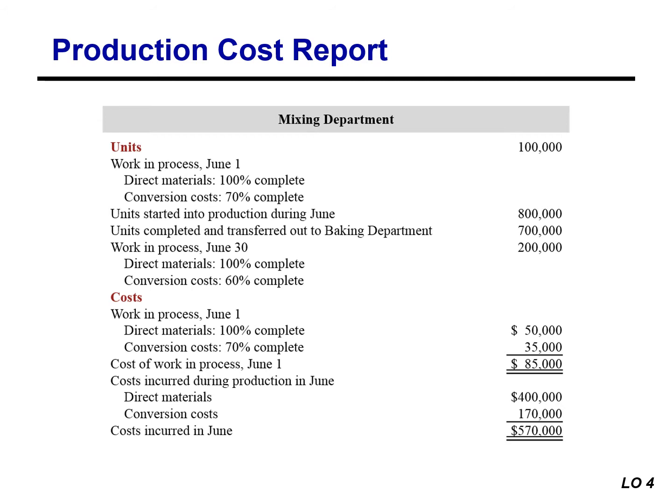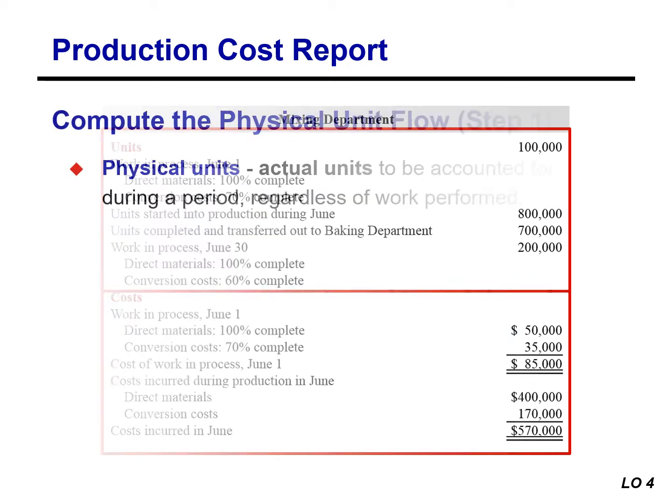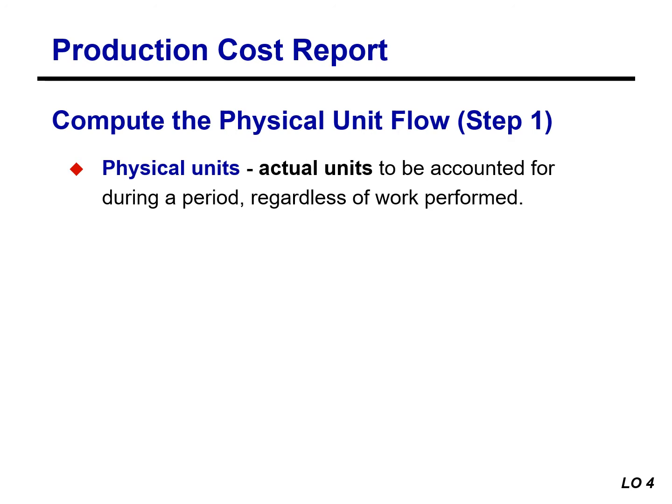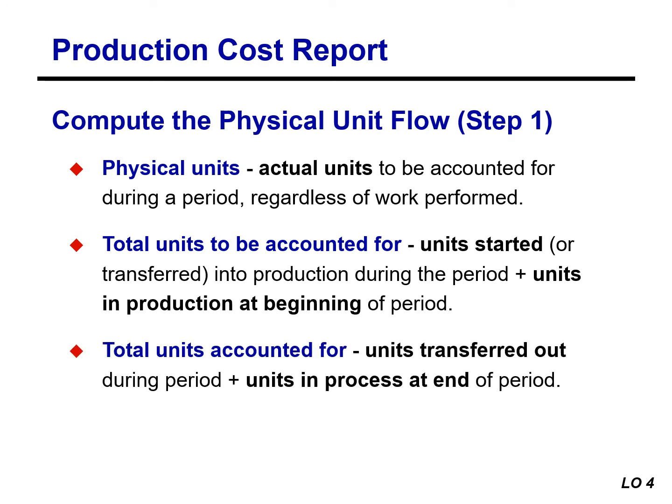It is very important that you separate the data pertaining to units from cost. Physical units are the actual units to be accounted for during a period regardless of work performed. To keep track of these units, add the units started or transferred into production during the period to the units in process at the beginning of the period. This amount is referred to as the total units to be accounted for. The total units are then accounted for by the output of the period, which consists of the units transferred out plus any units in process at the end of the period. This is referred to as the total units accounted for.